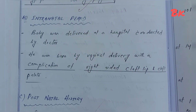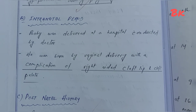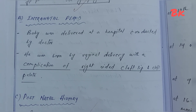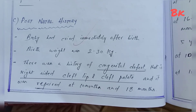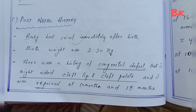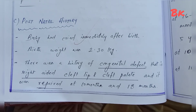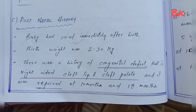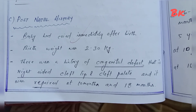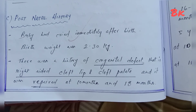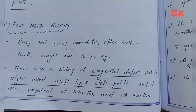Intranatal period: baby was delivered at a hospital conducted by a doctor. He was born by vaginal delivery with a complication of right-sided cleft lip and cleft palate. Postnatal history: baby cried immediately after birth. Birth weight was 2.3 kg. There was a history of congenital defect — right-sided cleft lip and cleft palate — and it was repaired at 10 months and 18 months of age.